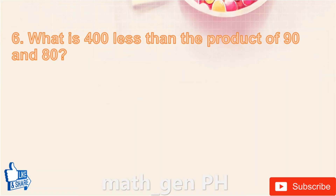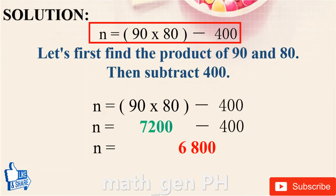Question number 6: What is 400 less than the product of 90 and 80?